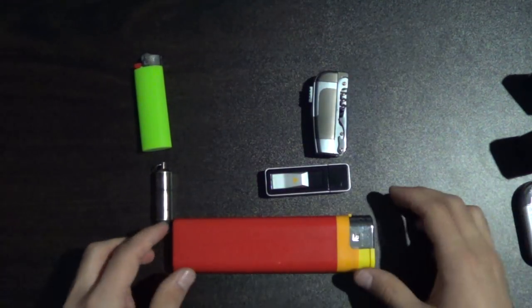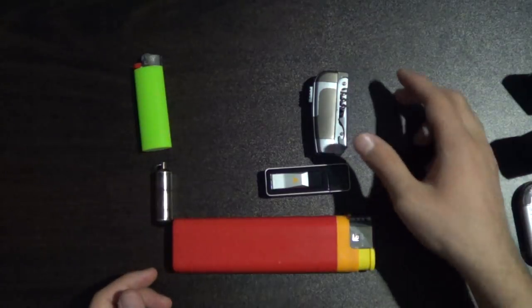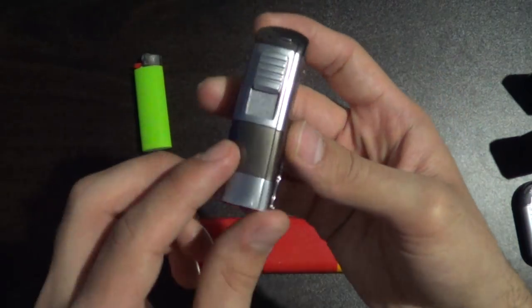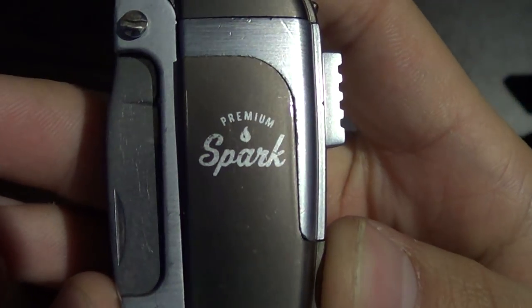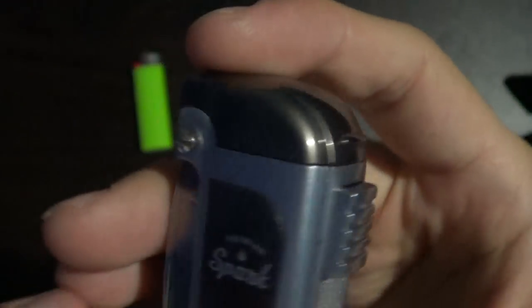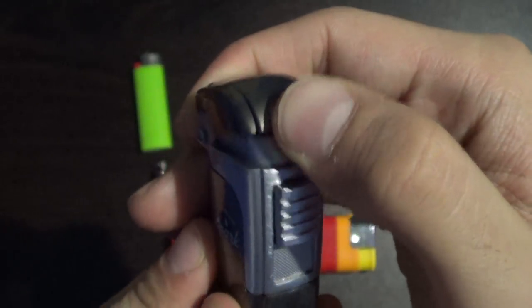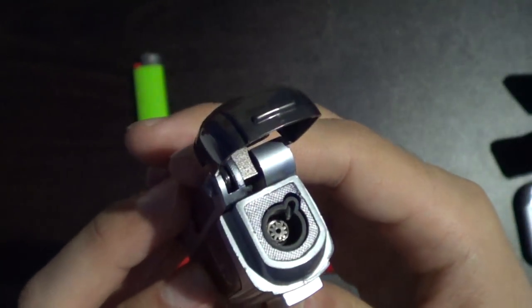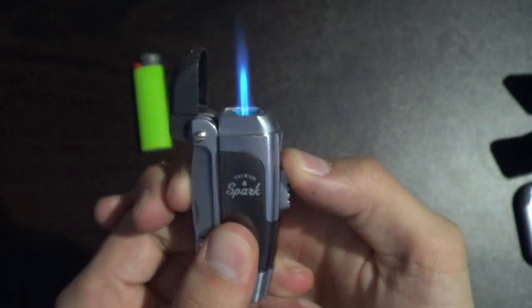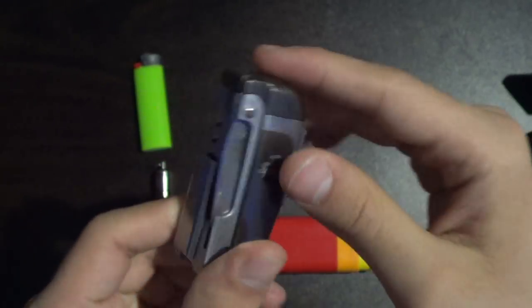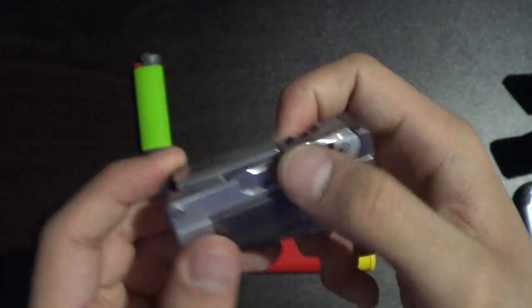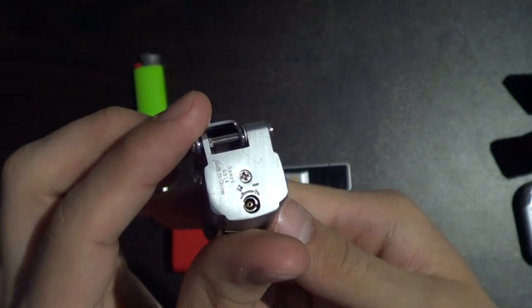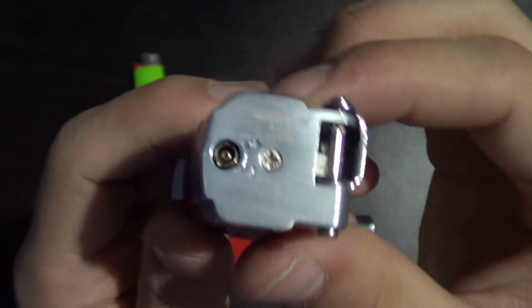And now we're getting into some of the more interesting ones. Let's do this one first. This one says premium spark on it. And this is again a butane lighter. So the cap flips up there, and then we have a nice flame. But the cool thing about this one is that it's kind of like a Swiss Army knife and a lighter all in one.